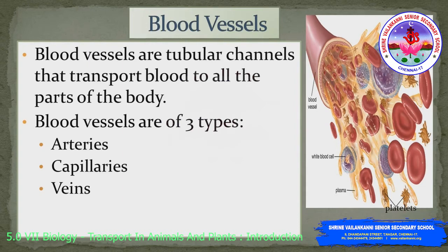Blood is circulated to all parts of the body through the blood vessels. The presence of certain substances called clotting factors prevents the blood from clotting when they are present within the blood vessel. The blood vessels are tubular channels that transport blood to all parts of the body. The blood vessels are of three types: arteries, capillaries, and veins.